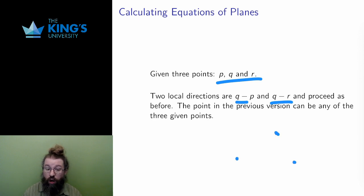These two subtractions are local directions, so now I am in the previous case. I have a point and two local directions, and I have three points, so I can use any of the three points here as the specific point in the second case.